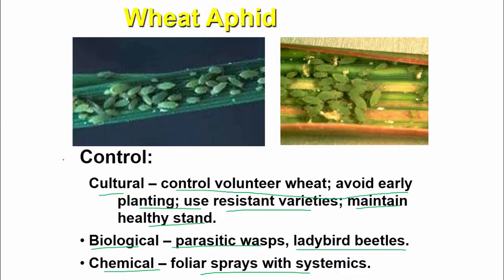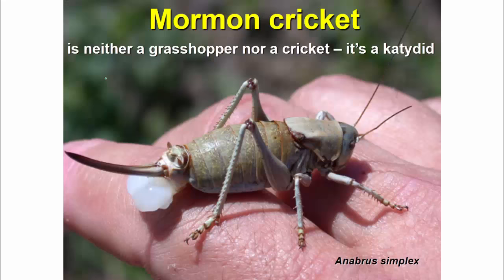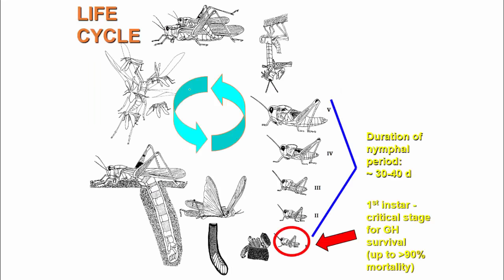Different types of grasshoppers are shown: migratory, differential, true stripped, and banded. Mormon cricket is also covered — it is neither a grasshopper nor a cricket but is katydid-like. The grasshopper life cycle is shown with nymphal period duration of 30 to 40 days. The first instar is a critical stage, with up to 90% mortality possible at that stage.